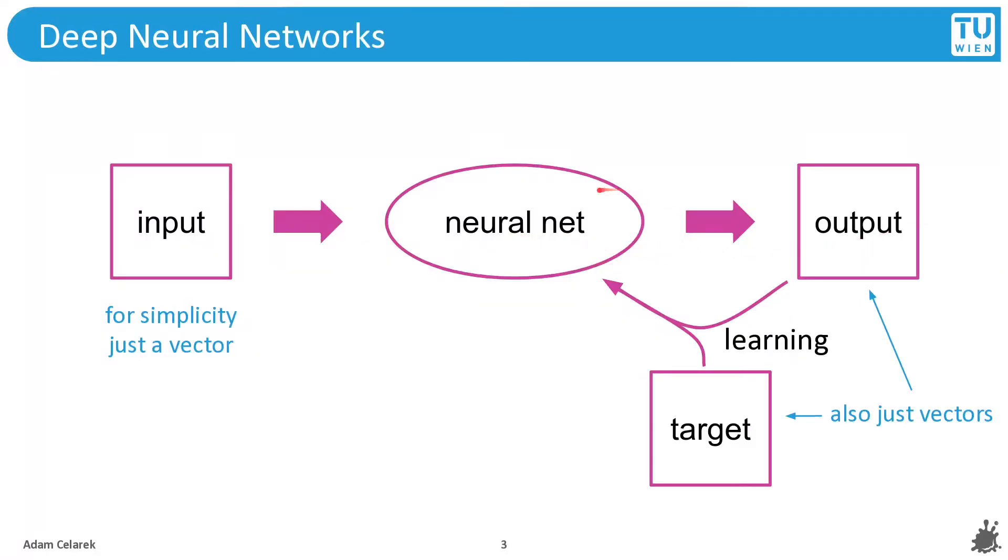Neural networks. Basically, neural networks are functions with learnable parameters. They try to map the input to the output as closely as possible, and they do this by trying to learn these parameters to fit a certain target. For simplicity, our input, output, and target will be just vectors.